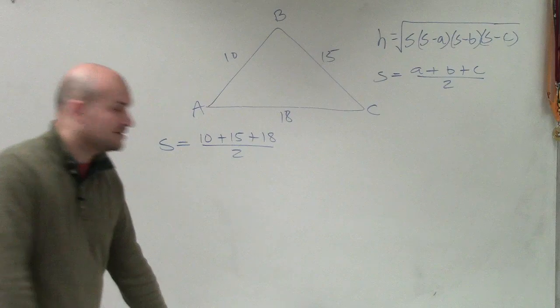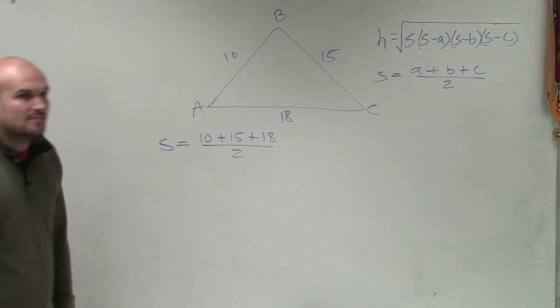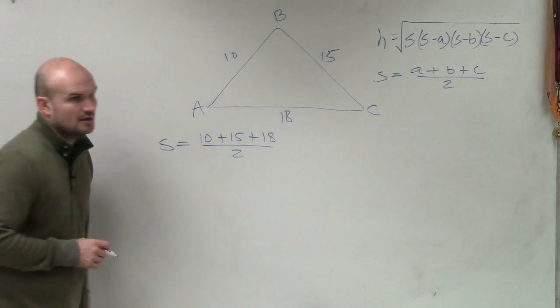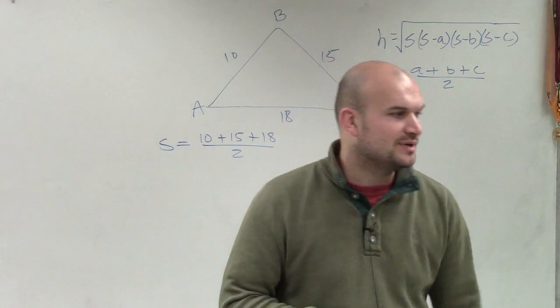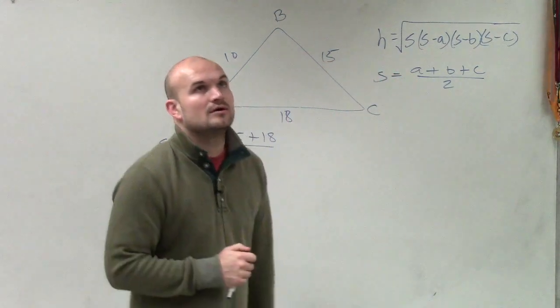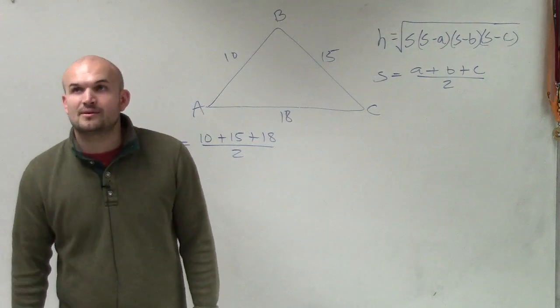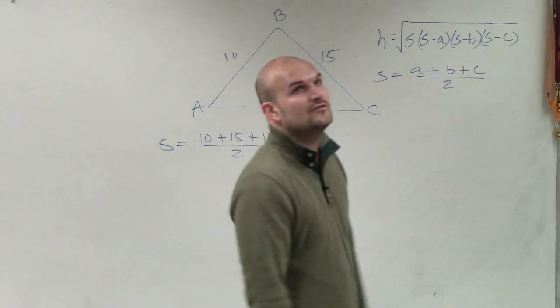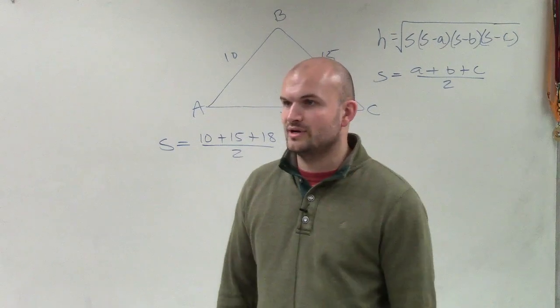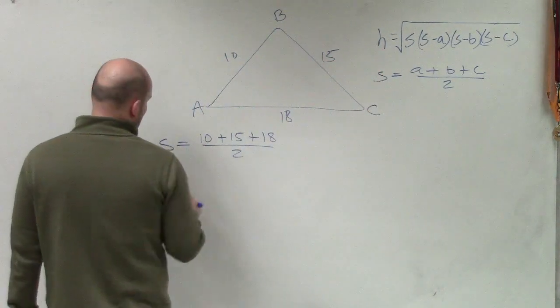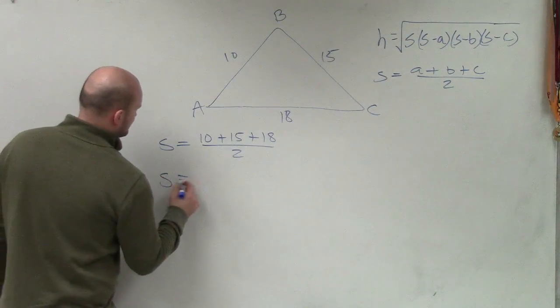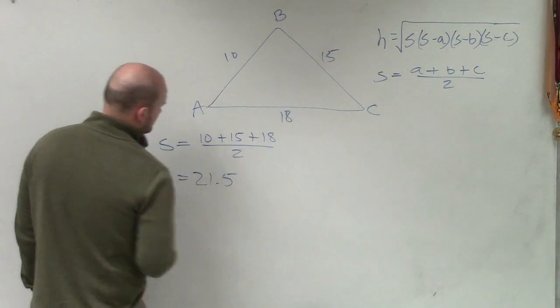So therefore, that's going to be 10 plus 18 plus 15, which equals 43. And then divide by 2, which is going to be 43 divided by 2, which would be 21.5. OK?